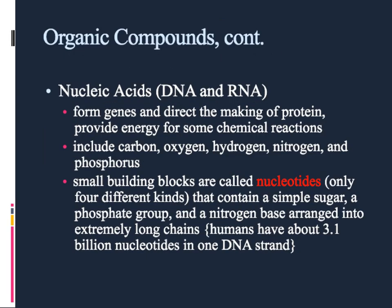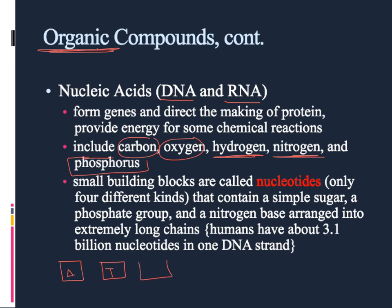Our last organic compound is nucleic acids, and there are only two examples: DNA and RNA. Again, we're dealing with organic compounds, so we know there's carbon, oxygen, and hydrogen. Now we see nitrogen again, and then a new one — phosphorus. Nucleic acids also have little small building blocks, but instead of having 20 like amino acids do, they only have four: A, T, C, and G — hopefully you remember some of this from biology.